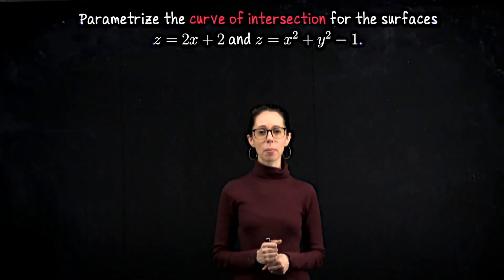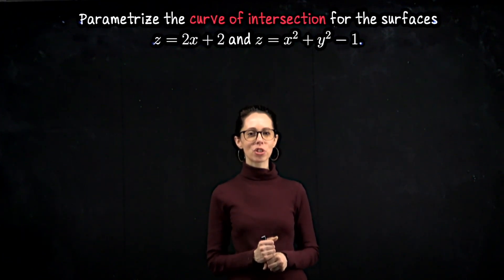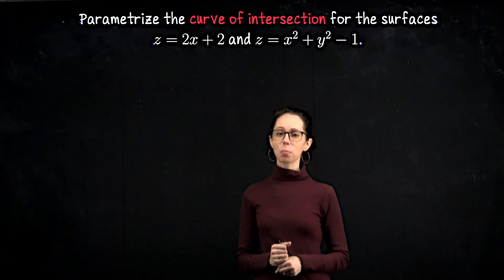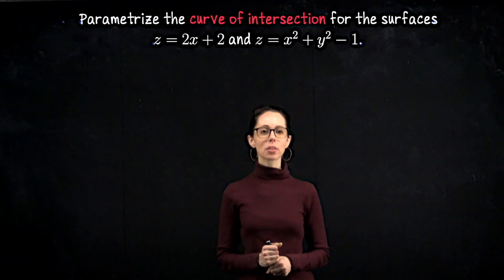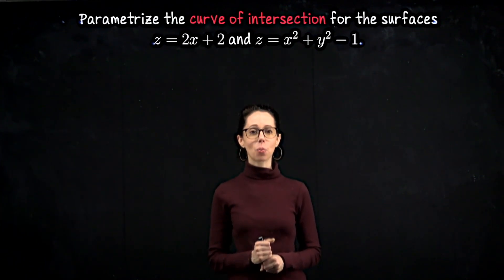In this exercise, we are going to parametrize the curve of intersection for the surfaces z equals 2x plus 2 and z equals x squared plus y squared minus 1.